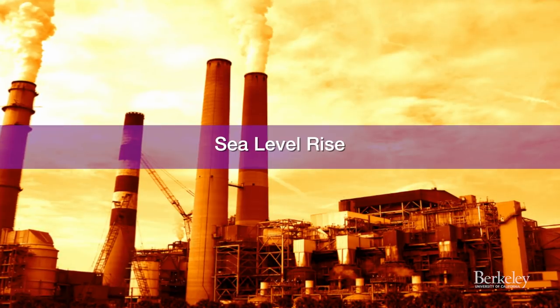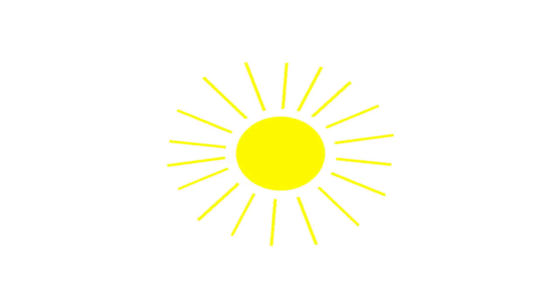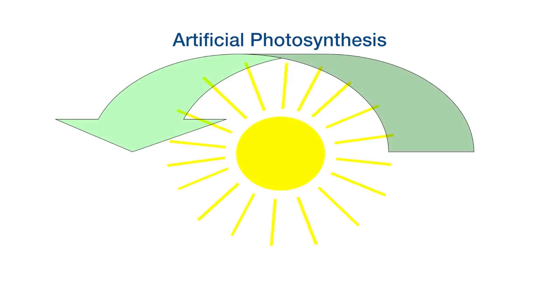In order to mitigate these problems, we need to introduce more and more renewable energy technology into our overall energy portfolio. One of such technologies is called artificial photosynthesis — a process that can convert solar energy and store it into a chemical bond.